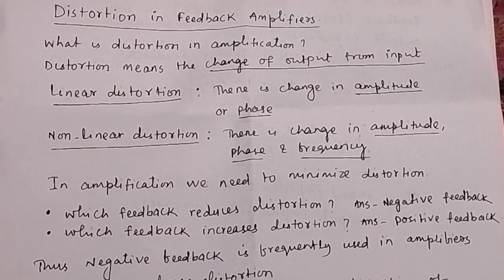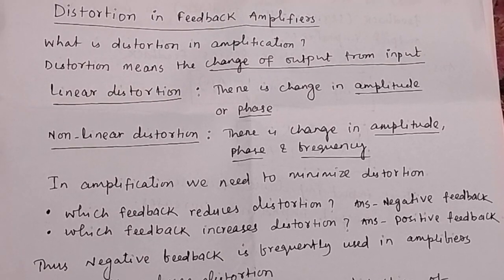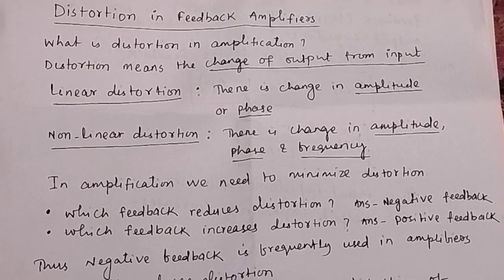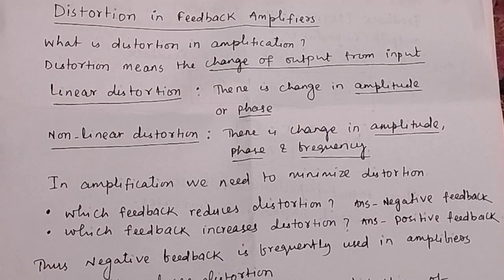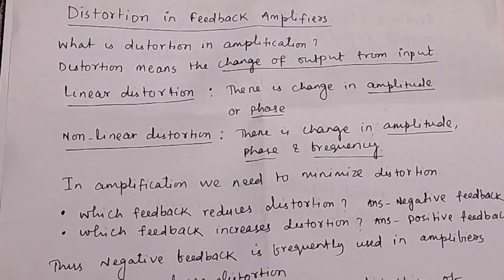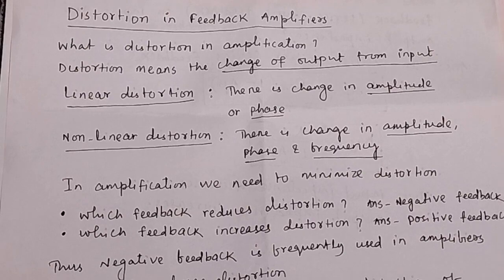Distortion in feedback amplifiers. What is distortion in amplifiers or amplification? Distortion means the change of output from input — the change in wave shape of the output from the input is called distortion.